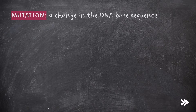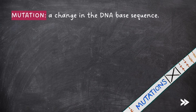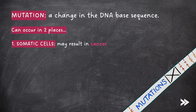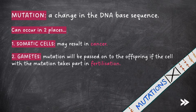A mutation is a change in the DNA base sequence. It can occur in two places. A mutation may occur in somatic cells, i.e. normal body cells, which may result in cancer. They may occur in gametes, which can mean that the mutation will be passed on to the offspring if the cell with the mutation takes part in fertilization.